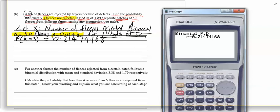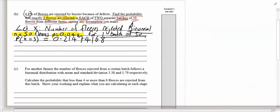Okay, so now let's read the question again. Find the probability that exactly three fleeces are rejected in each of two separate batches of 50 fleeces from different farms, stating any assumptions you make.